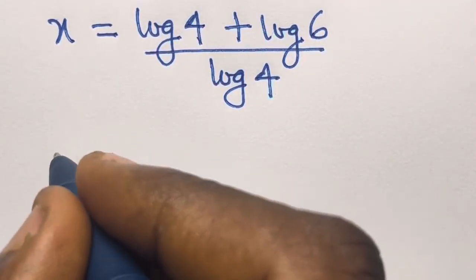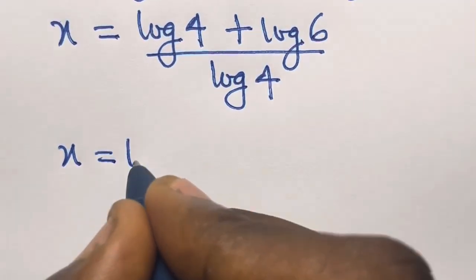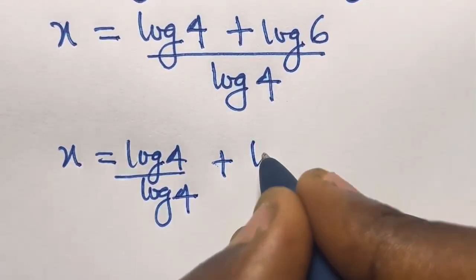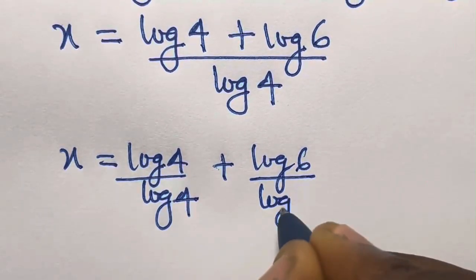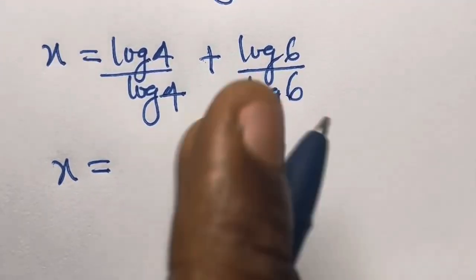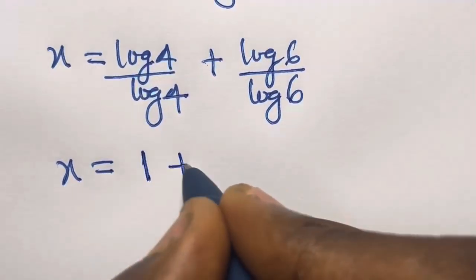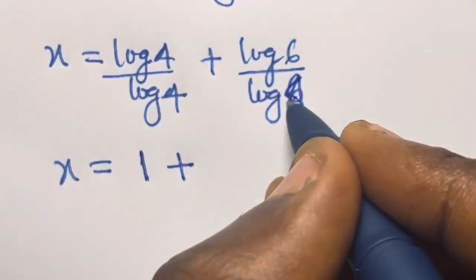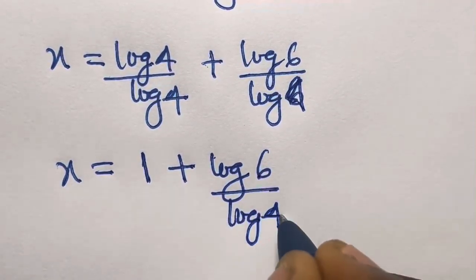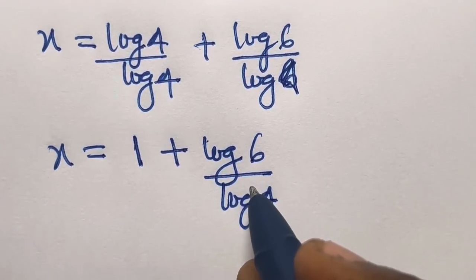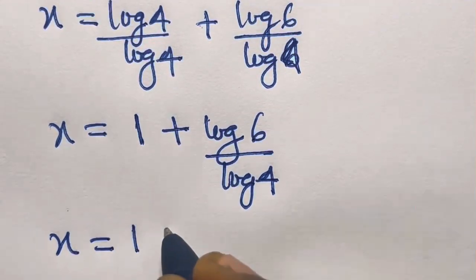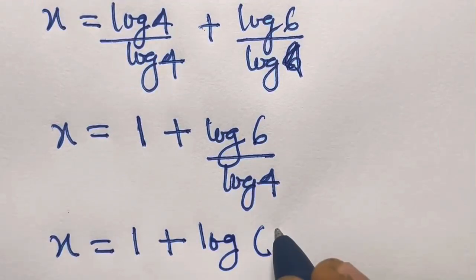Splitting the fraction, x equals log 4 divided by log 4, plus log 6 divided by log 4. Since log 4 over log 4 equals 1, and we can express 6 as the product of 3 and 2, we have x equals 1 plus log(3 times 2) divided by log 4.